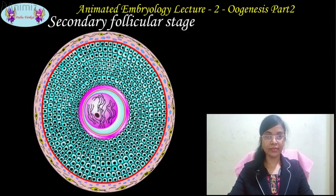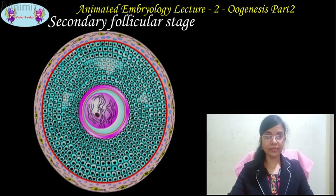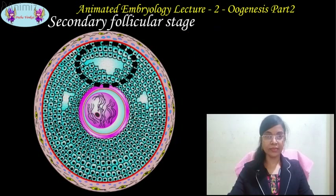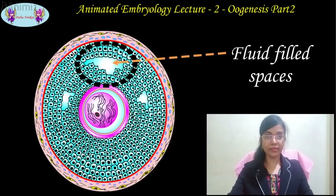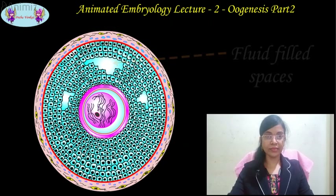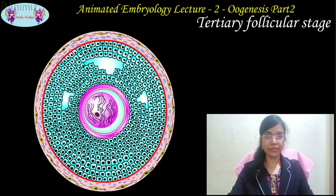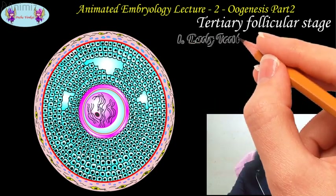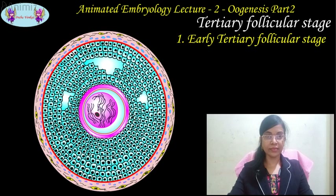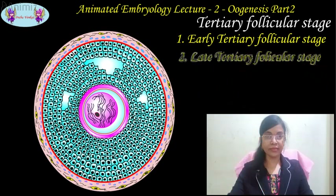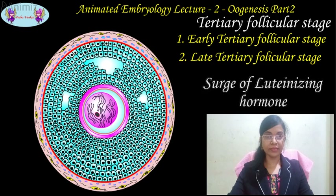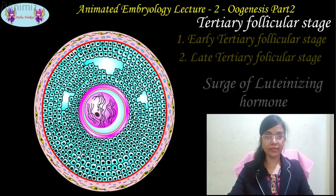Later in the secondary follicular stage, fluid-filled spaces start appearing in the secondary follicle. The tertiary follicle stage is divided into two sub-stages: the early tertiary follicle stage and the late tertiary follicle stage. Nearly 47 hours before ovulation, a surge of luteinizing hormone occurs that induces the tertiary follicle stage.